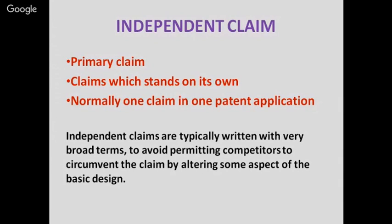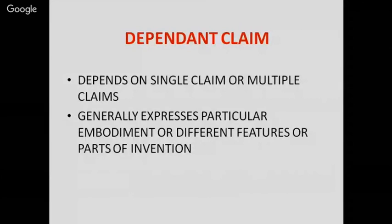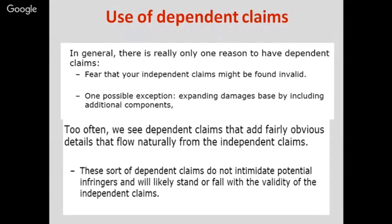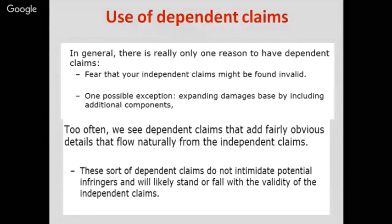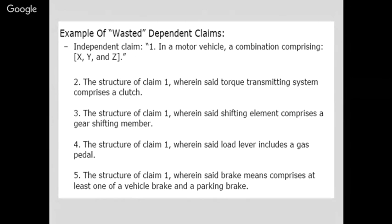There are two types of claims: independent claims and dependent claims. An independent claim is a primary claim that stands on its own, and normally there is one independent claim per patent application. Independent claims are typically written with very broad terms to avoid competitors circumventing the claim by altering some aspect of the basic design. Dependent claims depend upon a single claim or multiple claims and generally express particular embodiments or different features of the invention. Some dependent claims are not required to be written unnecessarily — for example, things that are apparent need not be written in the claim statement.